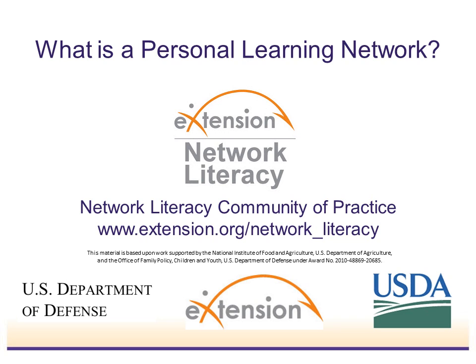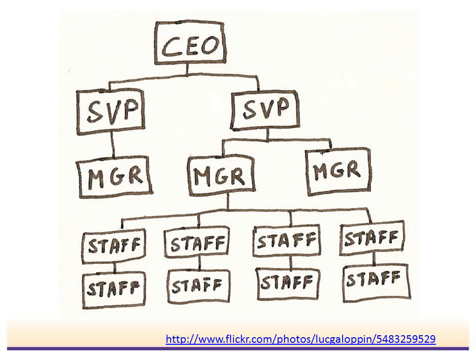Hi, I'm Bob Birch with the eExtension Network Literacy Community of Practice. We're going to talk about what is a personal learning network. Most of us are used to a very hierarchical arrangement when we think about how we get our information, or at least how we have gotten our information in the past. A lot of our information comes in a top-down flow — whether that's a CEO, university president, or book publisher at the top of that hierarchical structure — we have a very passive relationship with information as we wait for it to flow down through this hierarchy before it eventually gets to us.